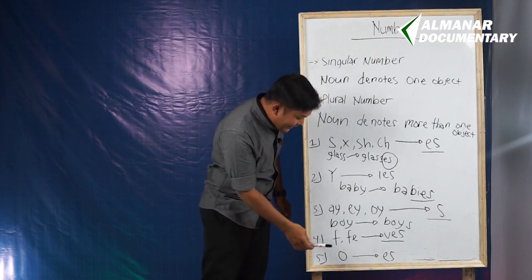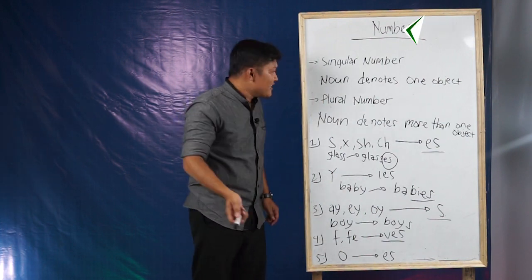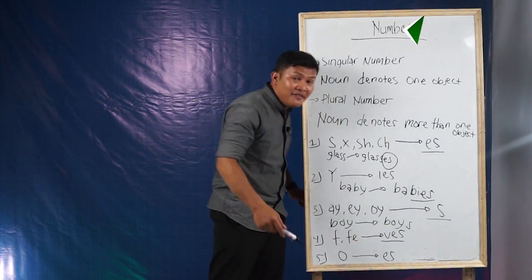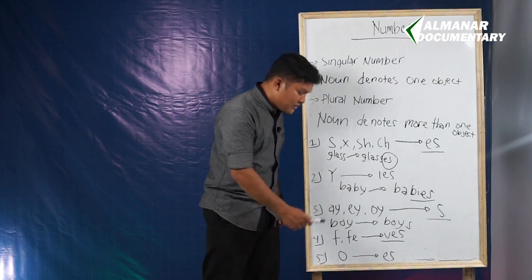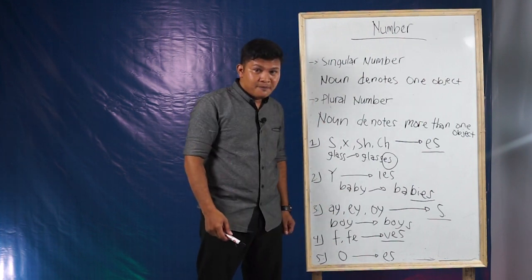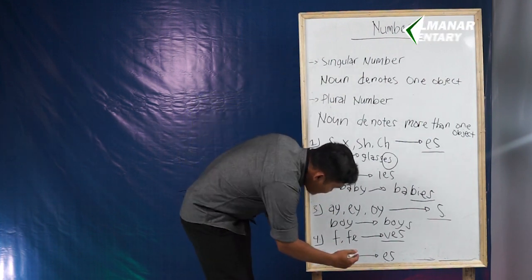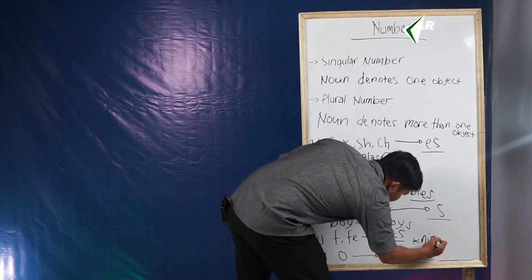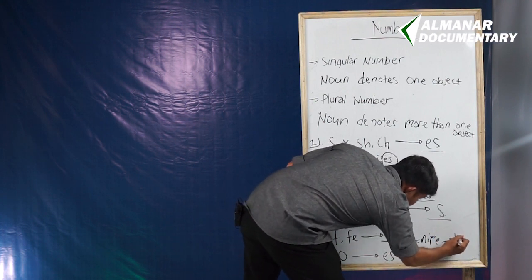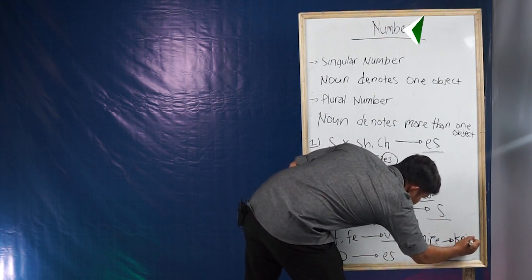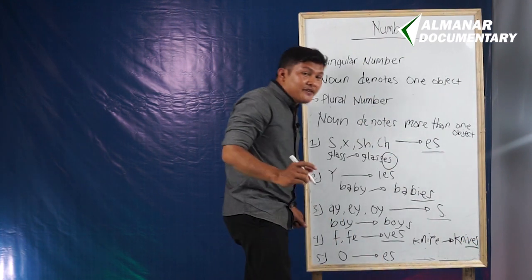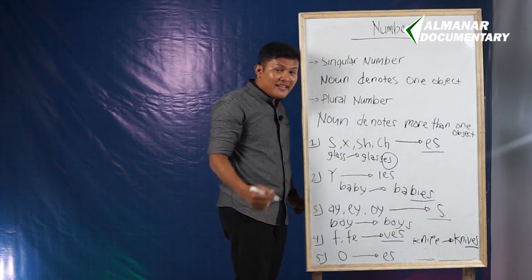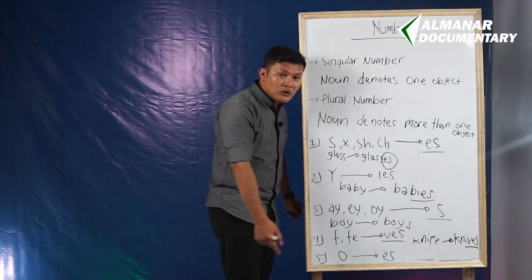The fourth rule: if the singular number ends with F or V and you want to turn it into the plural number, you just need to change it to VES at the end of the word. For example, 'knife' becomes 'knives'.